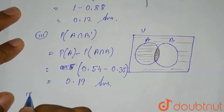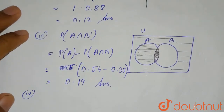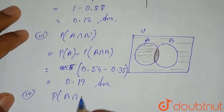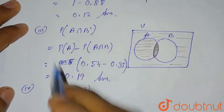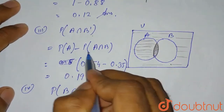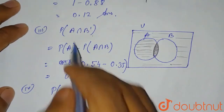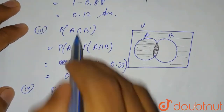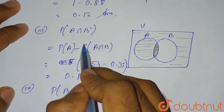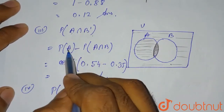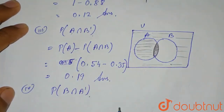The fourth question asks for P(B∩A'). From the earlier result, P(A∩B') = P(A) − P(A∩B). Similarly, by swapping A and B, P(B∩A') = P(B) − P(A∩B).